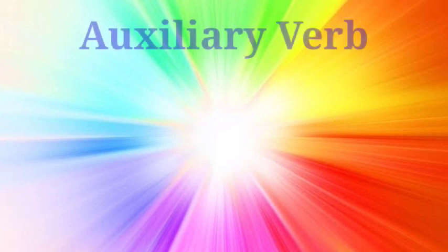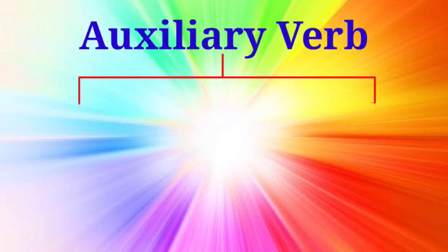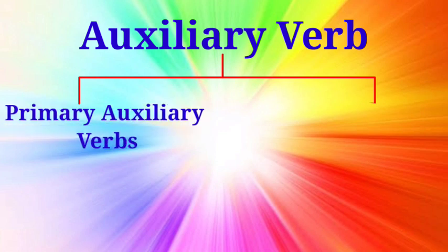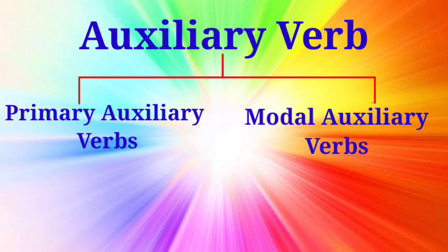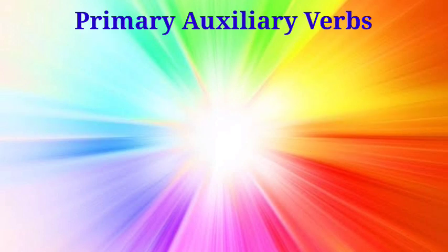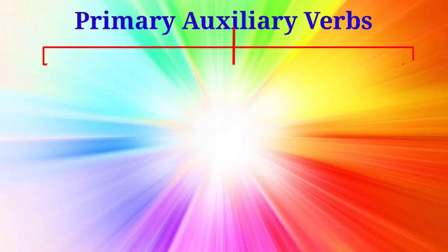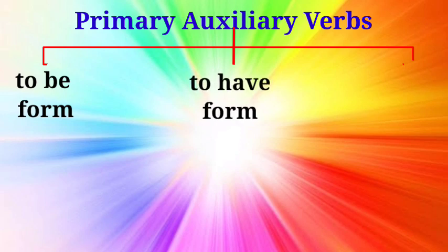The auxiliary verbs are of two kinds. The primary auxiliary verb and the modal auxiliary verb. In this video, I will deal with the primary auxiliary verb. The primary auxiliary verbs are basically of three types. To be form, to have form, and to do form.